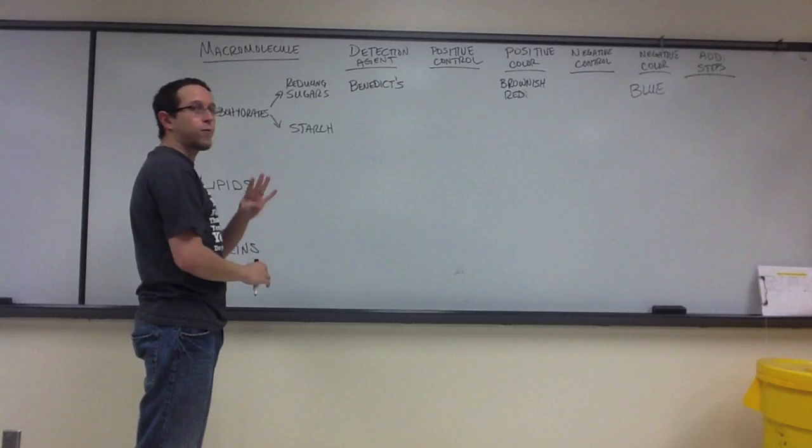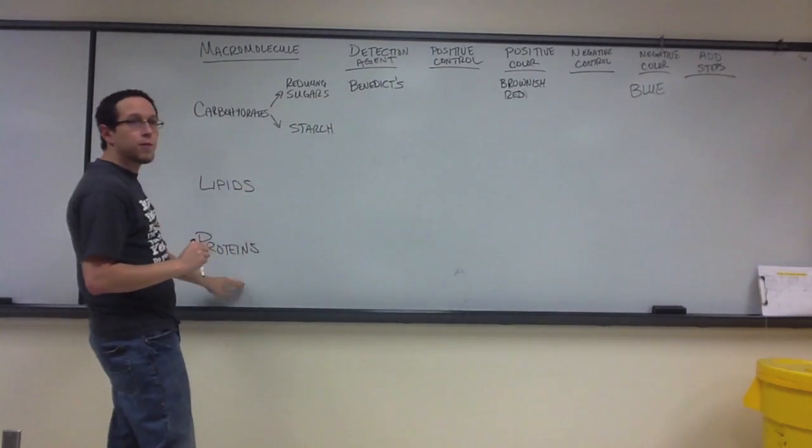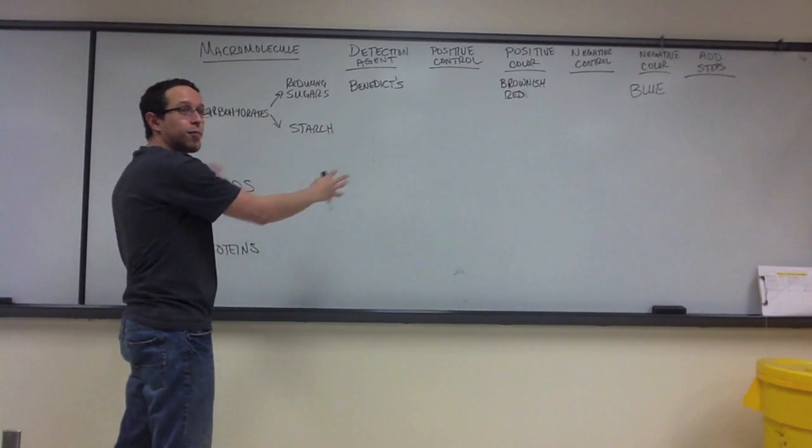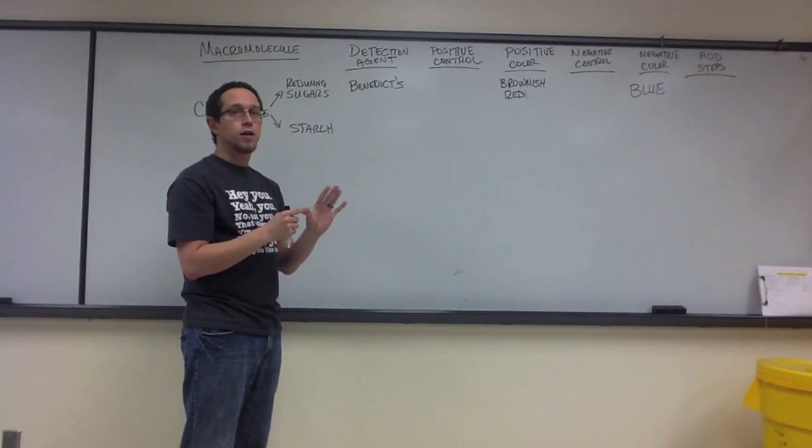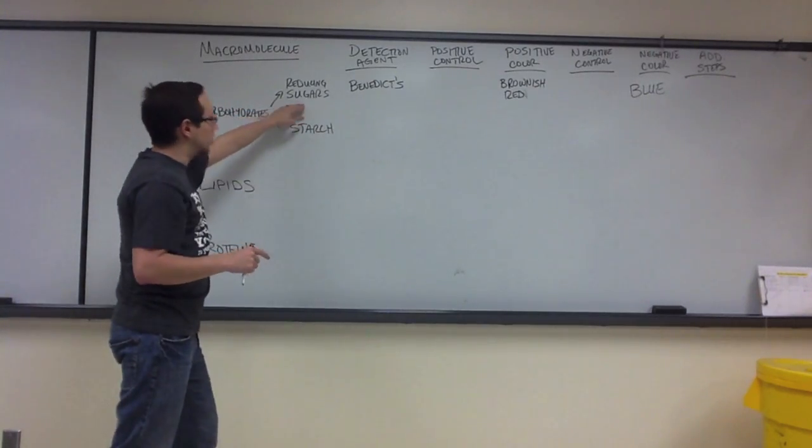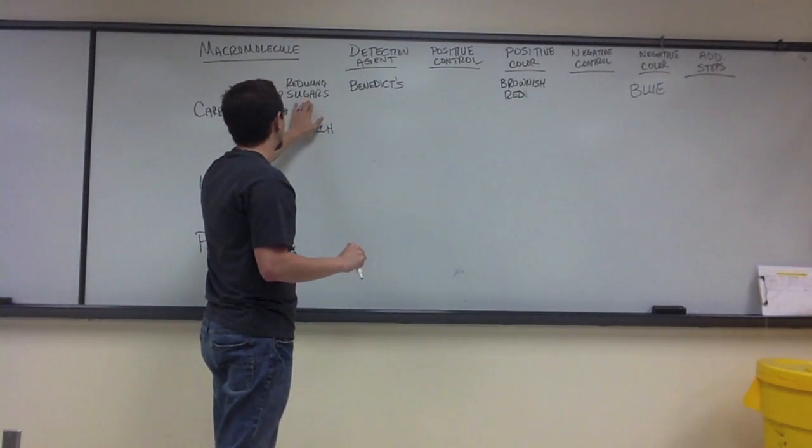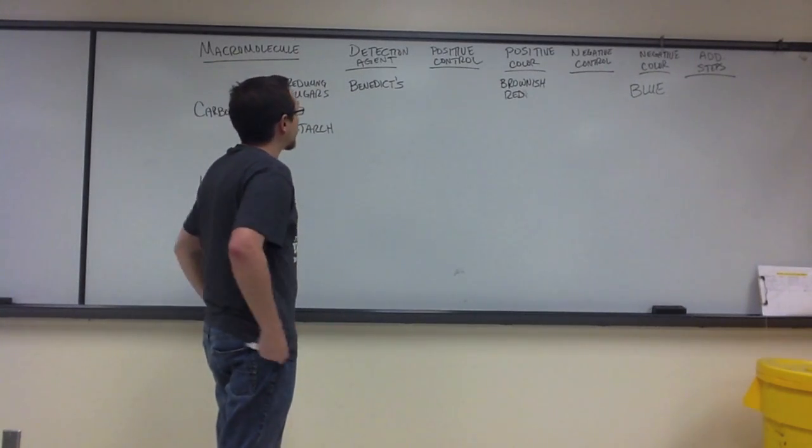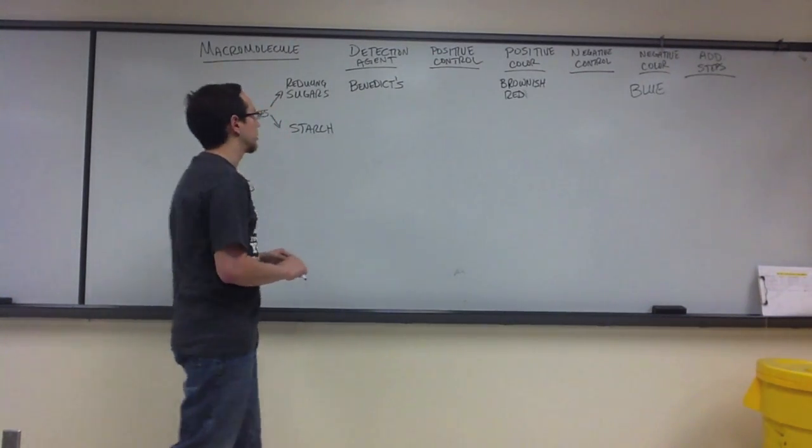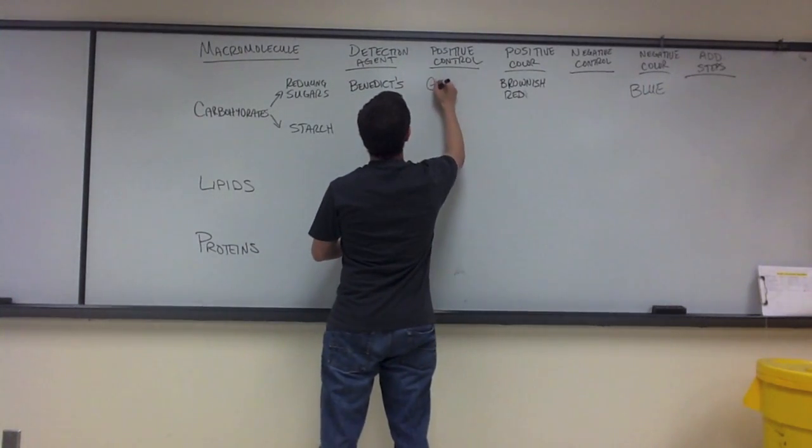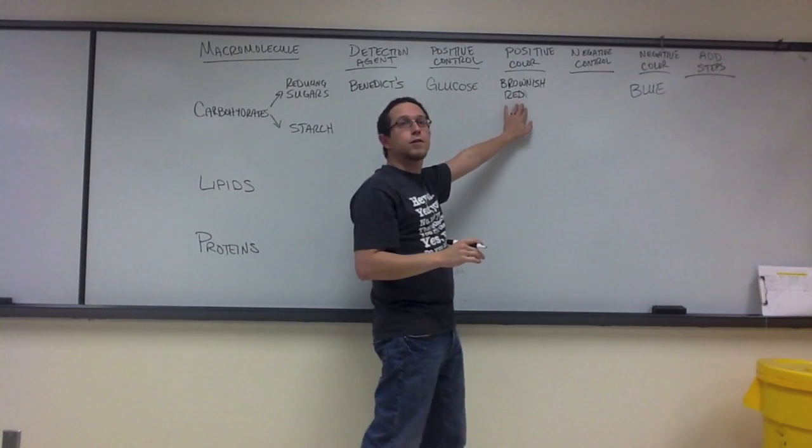Now, the positive control for this. You had four different solutions that you used as your positive controls. Positive controls are solutions that we know contain whatever macromolecule we were hoping to analyze. Typically reducing sugars are going to either be monosaccharides or, in some instances, disaccharides, but not polysaccharides. And the monosaccharides that we chose as our positive control was glucose. So, the glucose solution, when you placed it with the Benedict's, gave us that nice brownish-red color.